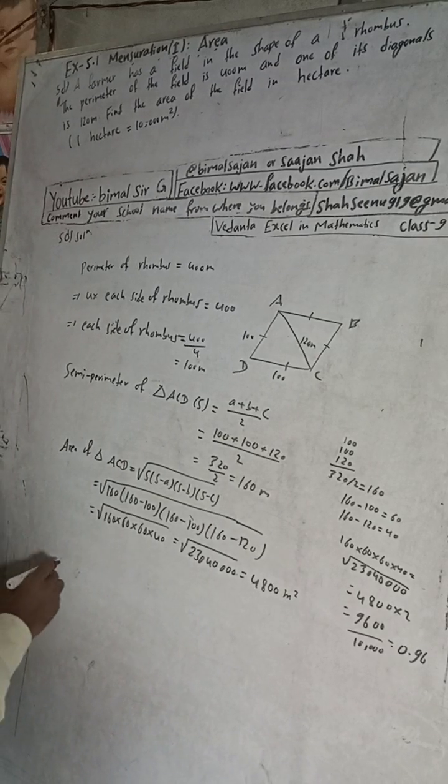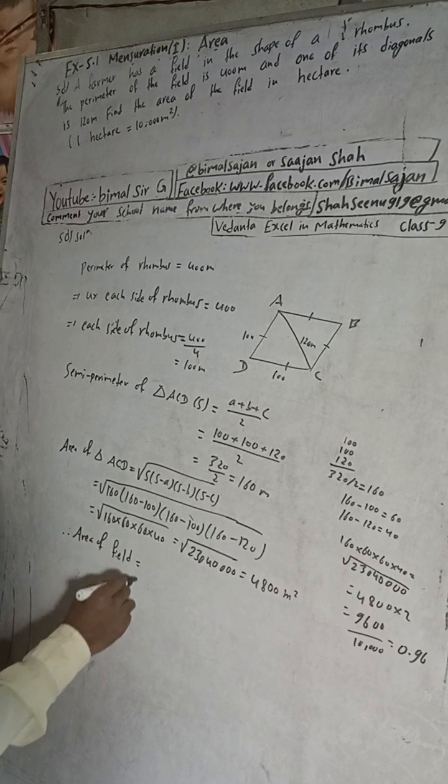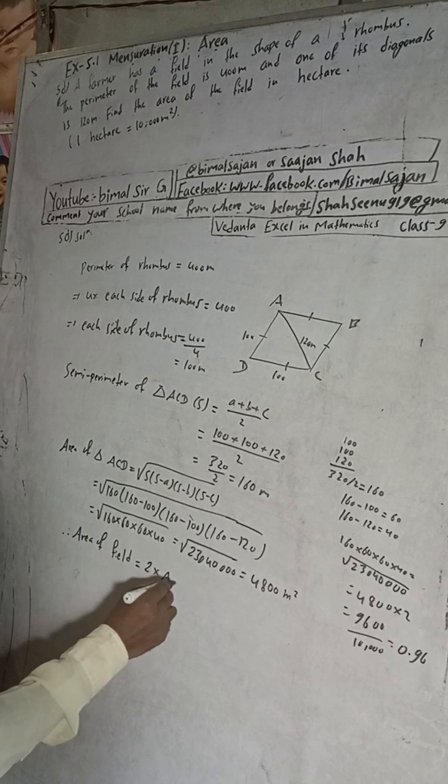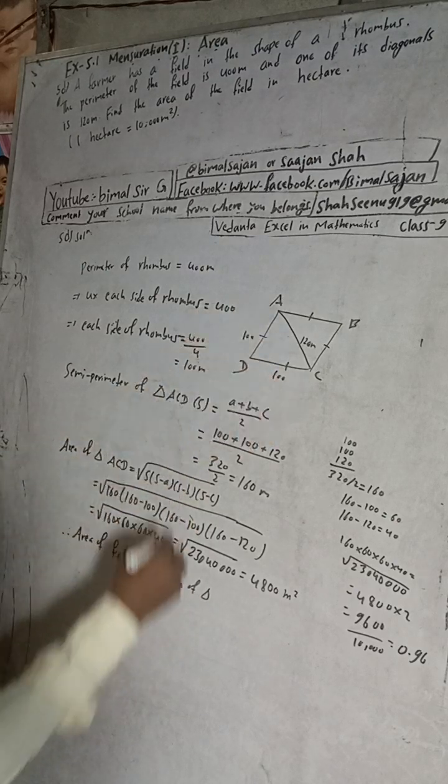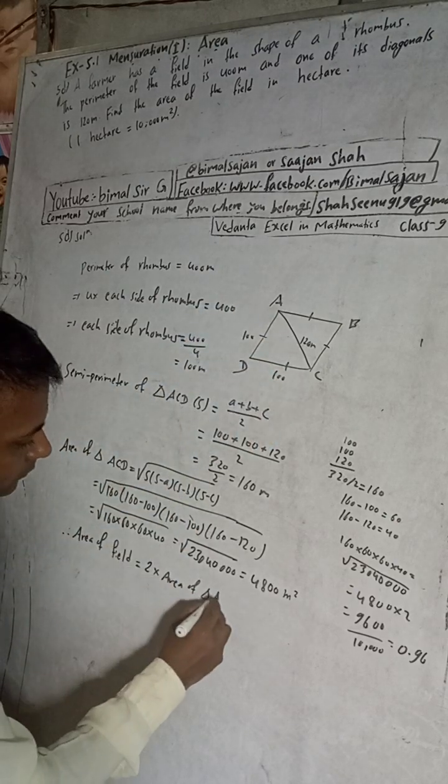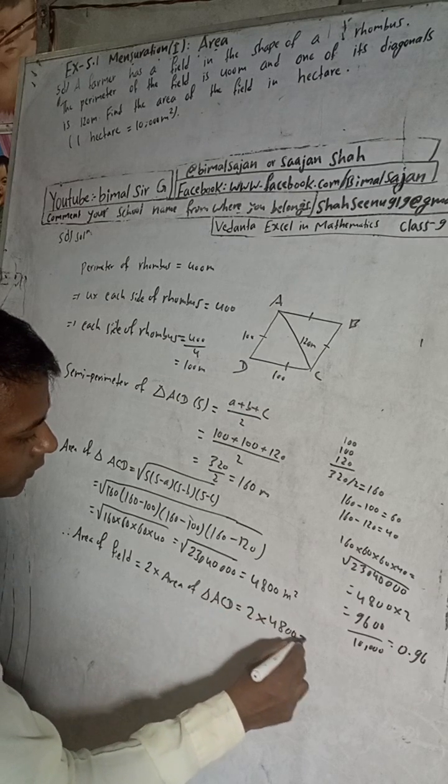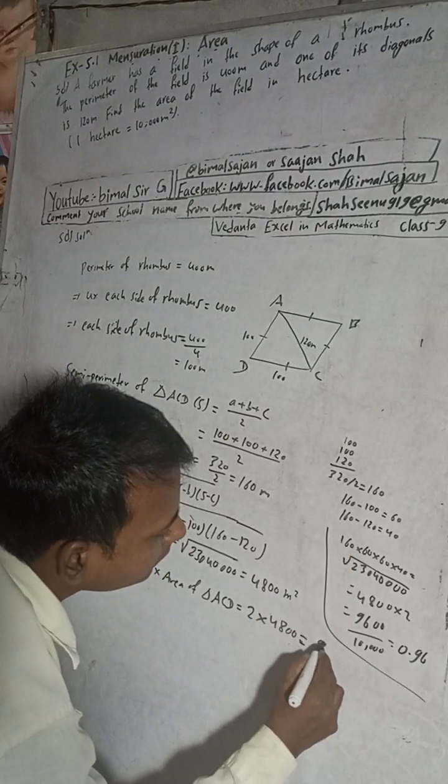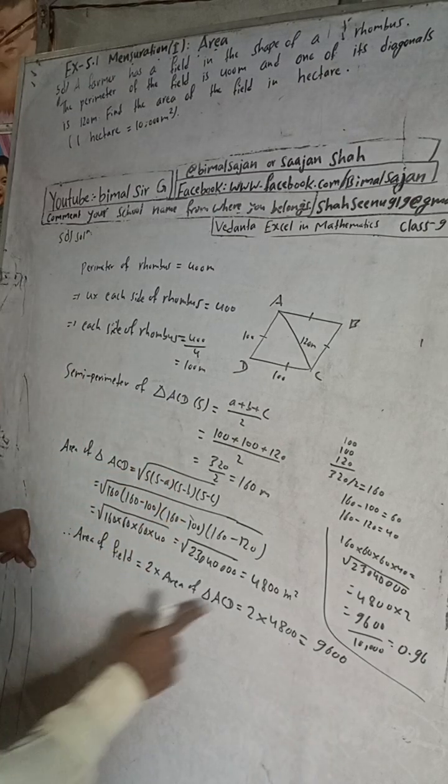Therefore, the area of the field is equal to 2 times area of triangle ACD. So 2 times 4,800 equals 9,600 meters squared. And here is given, the area in hectares.